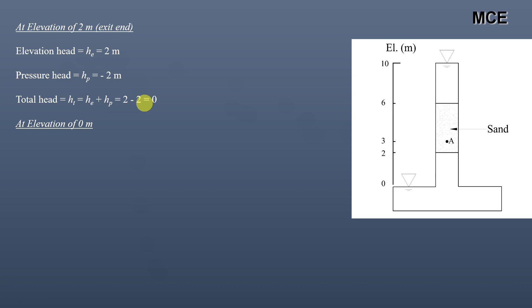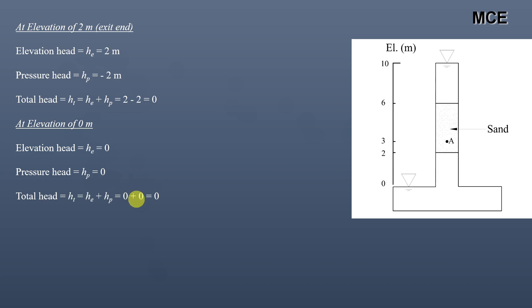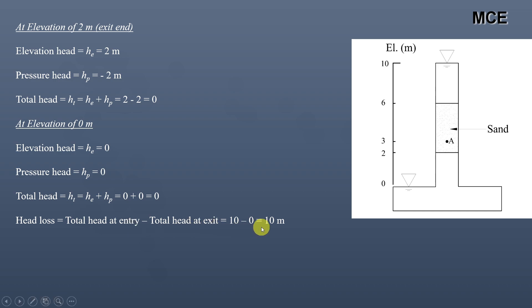At the elevation of 0 meters, the elevation head is 0 meters and the pressure head is 0 meters, because water is in contact with atmospheric pressure, so total head is also 0 meters. The total head loss, which is total head at entry minus total head at exit, is 10 minus 0, equal to 10 meters through the soil sample from entry end to exit end.